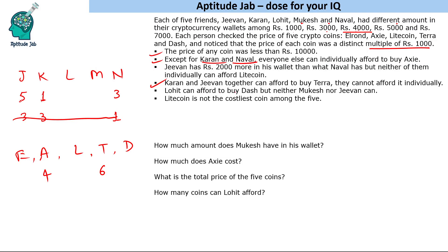Lohit can afford to buy Dash but neither Mukesh nor G1 can. This means Lohit has more money than Mukesh and G1. We are left with two amounts — 7000 and 4000 — so obviously Lohit will have 7000 and Mukesh will have 4000. This completes the wallet amount assignments.